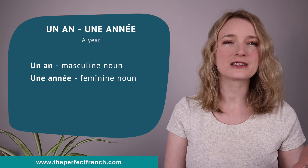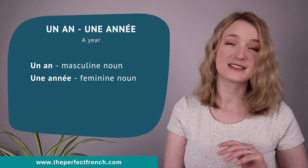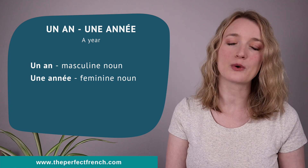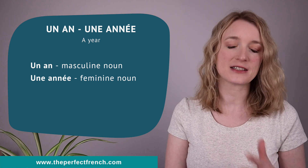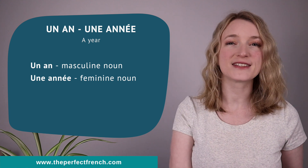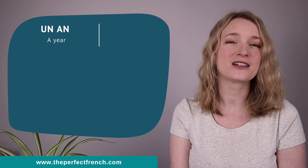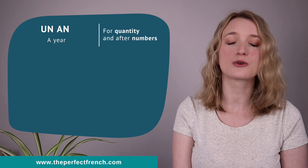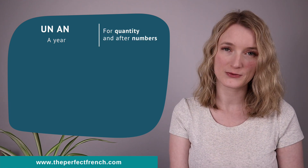It's all about precision or approximation. This is all about something very vague, but we also have very specific scenarios when we use them. So we are going to see each of them. We are going to start with un an, which we use for quantities and with numbers.